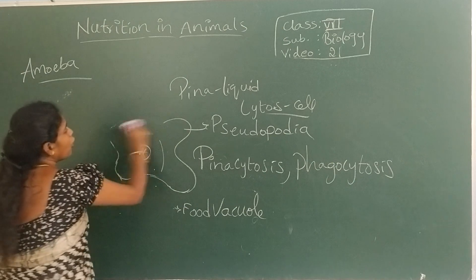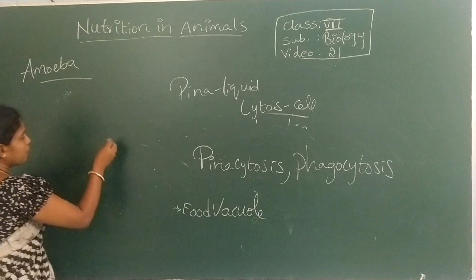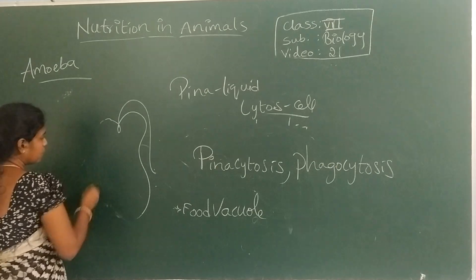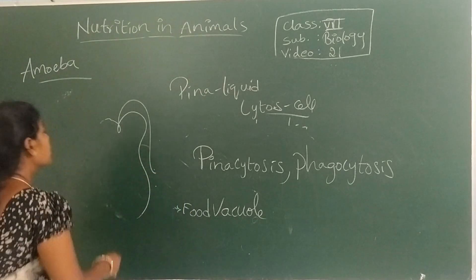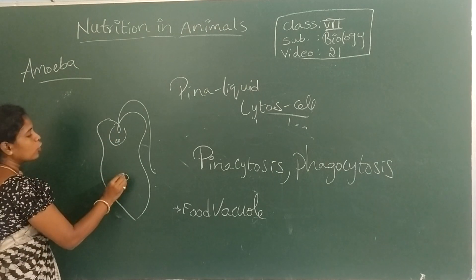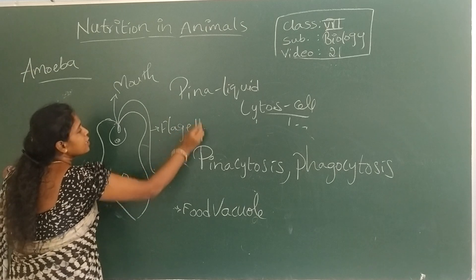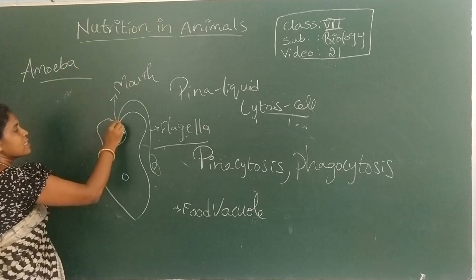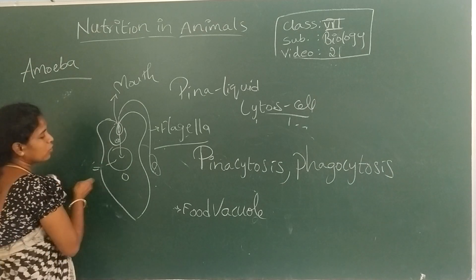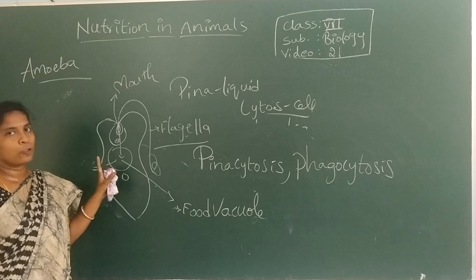The same procedure is followed by Euglena. Euglena is also an aquatic organism present in water. It has a flagellum — a whip-like structure — which traps food and sends it to the mouth. From the mouth, food goes inside and is stored in a food vacuole, where it is digested and utilized.